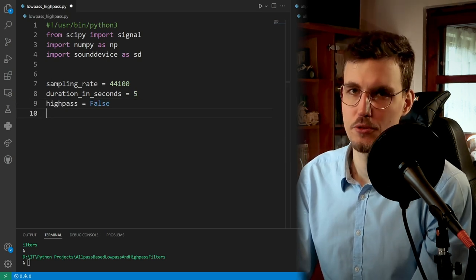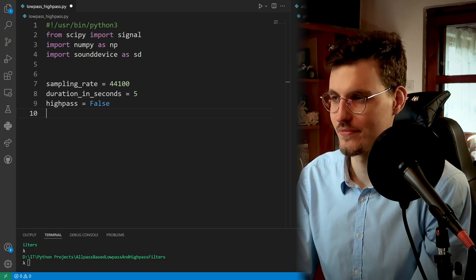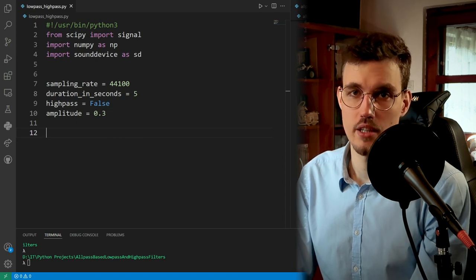And then we'll have a boolean variable telling us whether we want to have a low-pass or a high-pass. And finally, some amplitude so that we don't clip our loudspeakers.